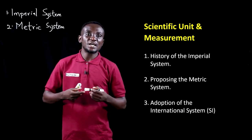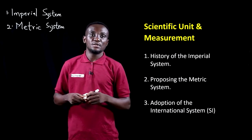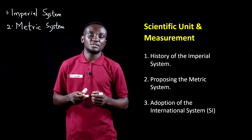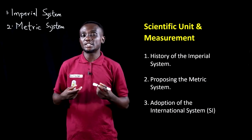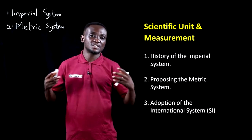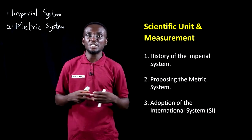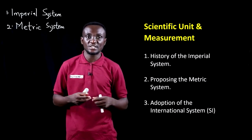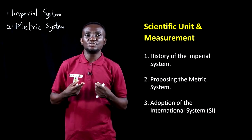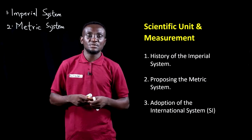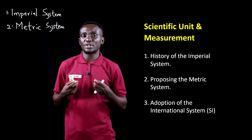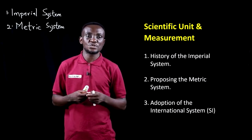The metric system largely had to do with measuring mass, and it did that in grams. It also measured distances generally in centimeters. After using this system for some time, they also realized how flawed it was.